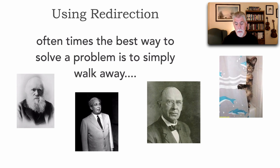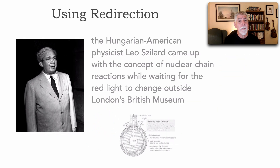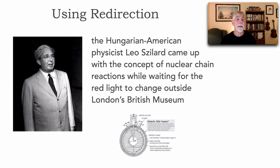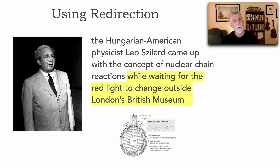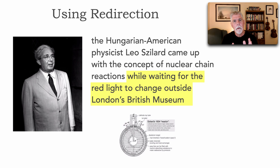Another good example is nuclear chain reactions. The Hungarian-American physicist Leo Szilard came up with the concept of nuclear chain reactions while waiting for a red light to change outside London's British Museum. He'd been working on that for so long, but being away from the problem — just waiting for that light to change — allowed him to suddenly say, 'I think I got it.'